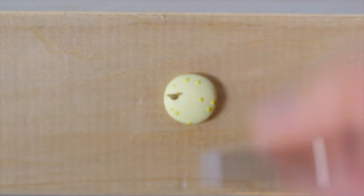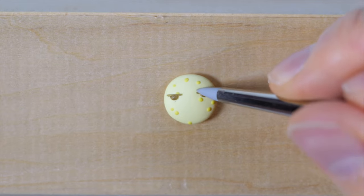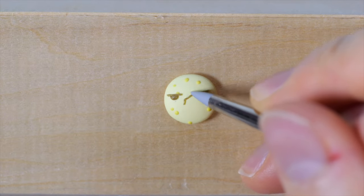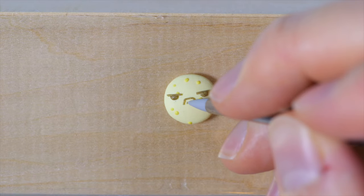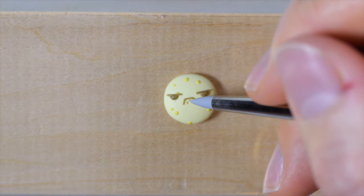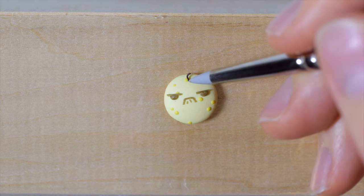For the spooky version, it's a little bit more annoyed. So we have some angry eyes. A very unhappy frown. Some frown lines. And then a little stem on top.